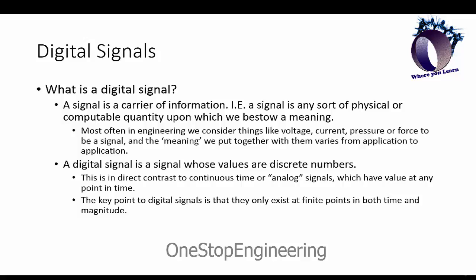A digital signal in contrast is one whose values are discrete numbers, as opposed to an analog signal, which has a value at any given infinitesimal point in time. Digital signals only have values that exist both at finite points in time and in magnitude.